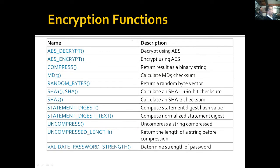Here are some of the encryption functions. We have AES_DECRYPT, which decrypts using the AES method, and AES_ENCRYPT, which encrypts using AES. COMPRESS returns a result as a binary string. MD5 calculates an MD5 checksum. RANDOM_BYTES returns a random byte vector. SHA1 and SHA are identical functions, both accepted by MySQL, and calculate a 160-bit checksum.